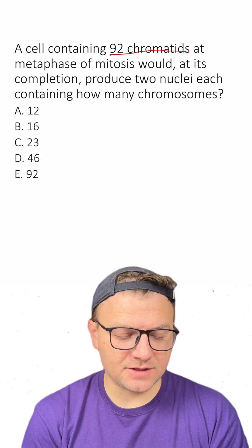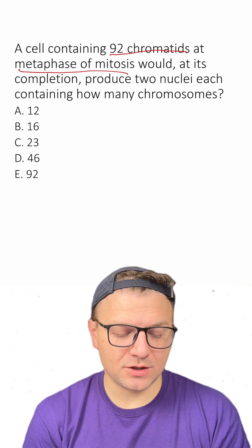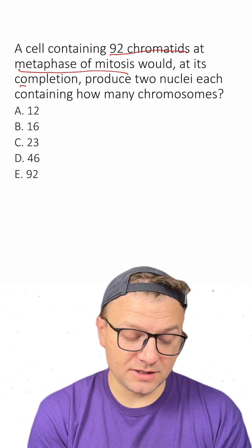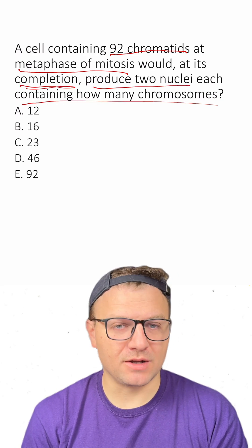A cell containing 92 chromatids at metaphase of mitosis would, at its completion, produce two nuclei, each containing how many chromosomes?